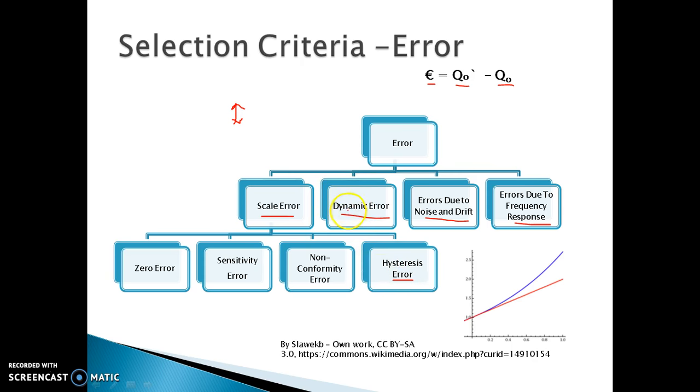The dynamic errors are possible when the input quantity is varying with time. Errors due to noise and drift and frequency response needs to be handled very carefully while choosing the transducers.